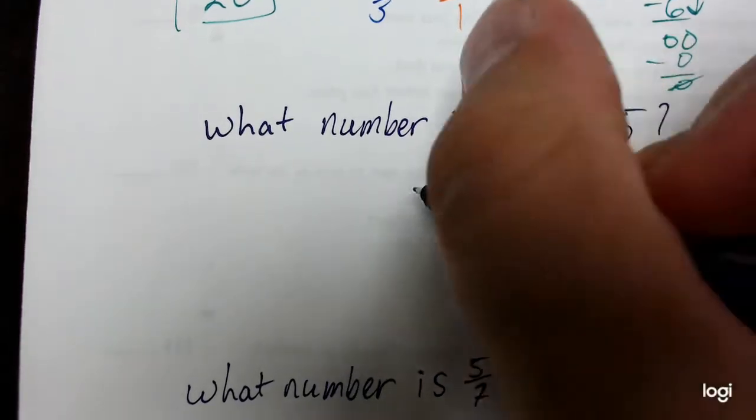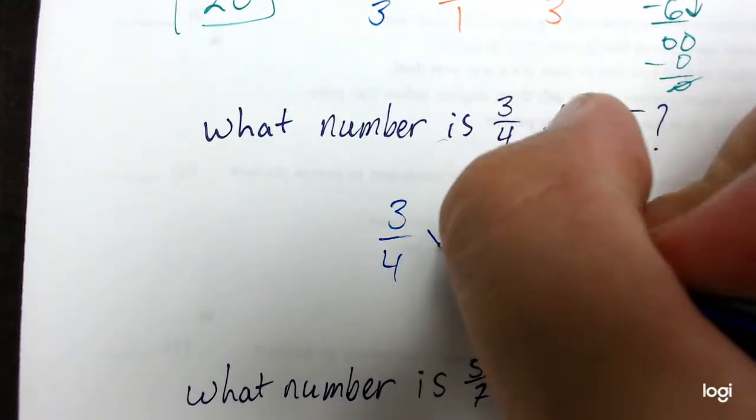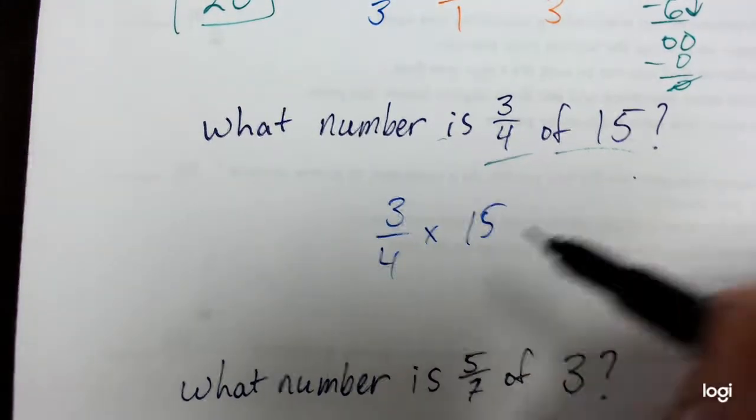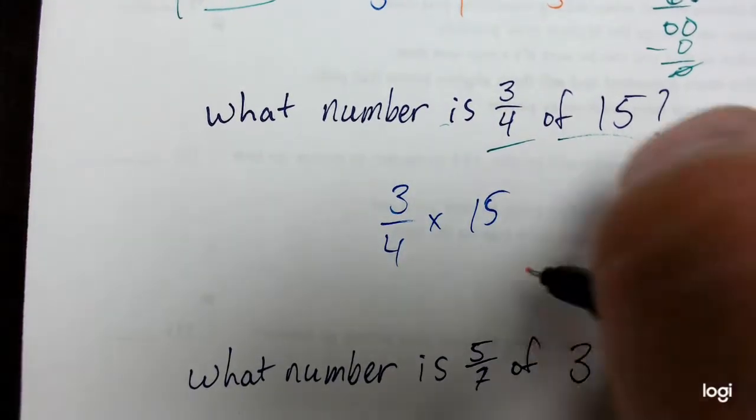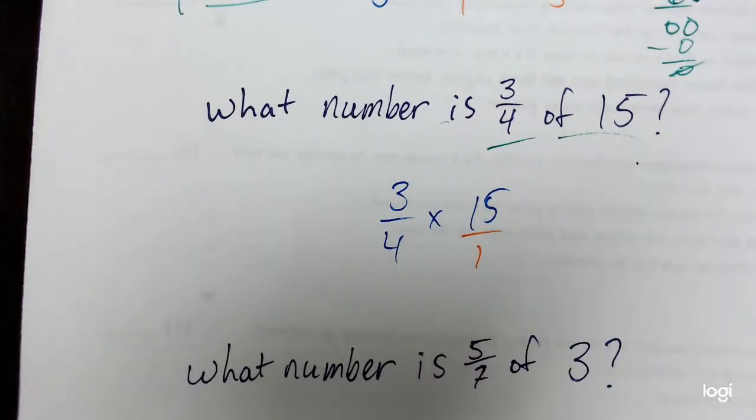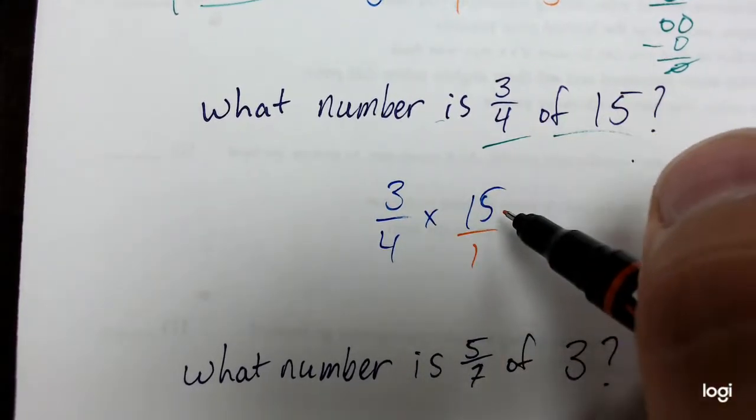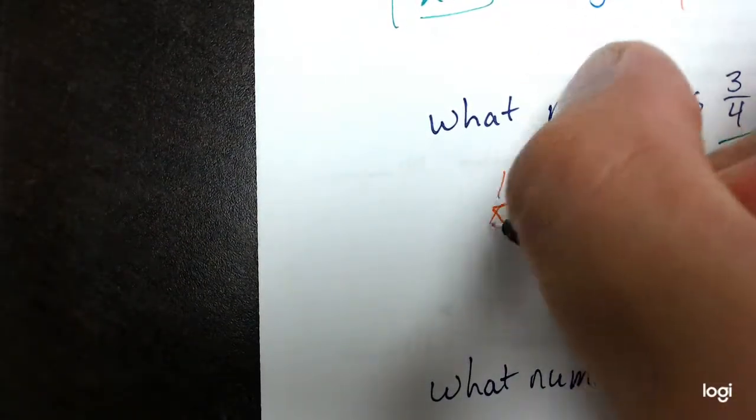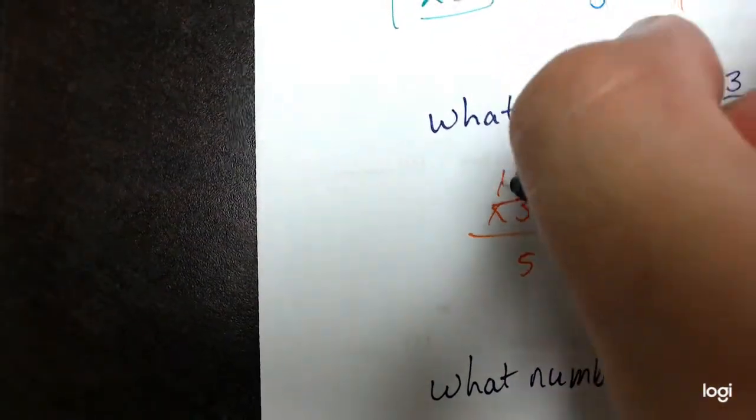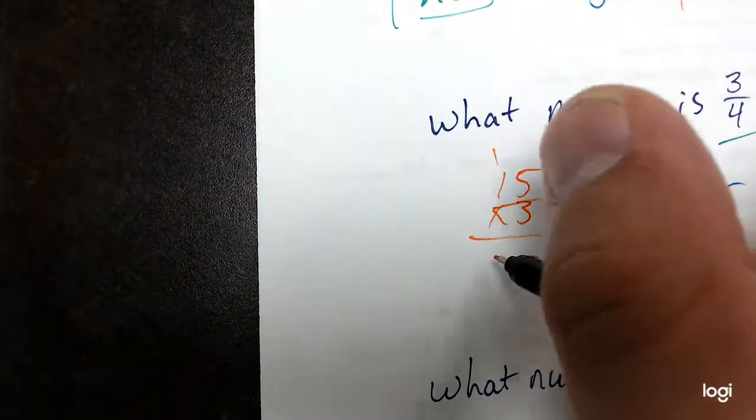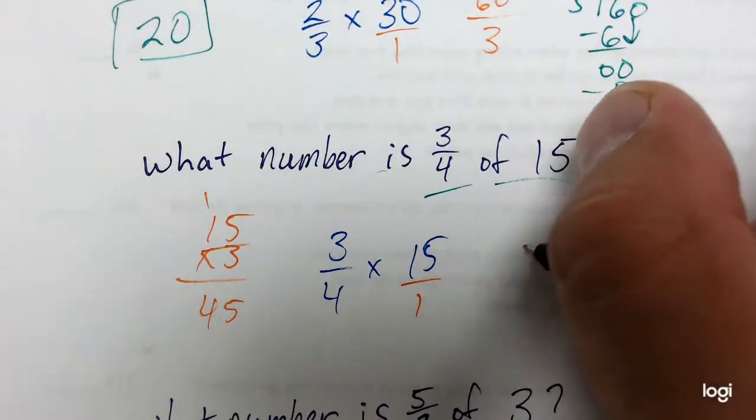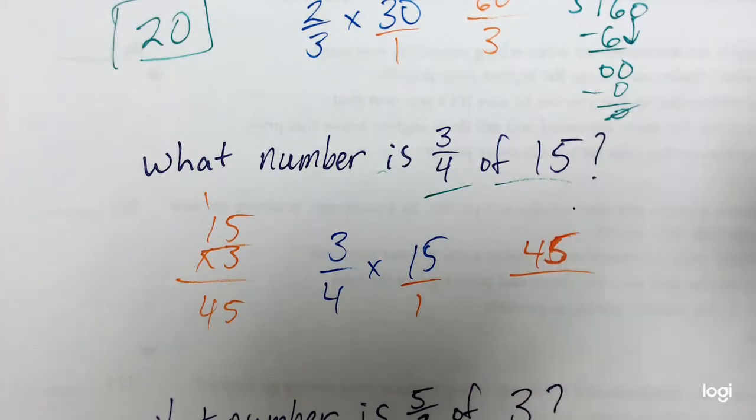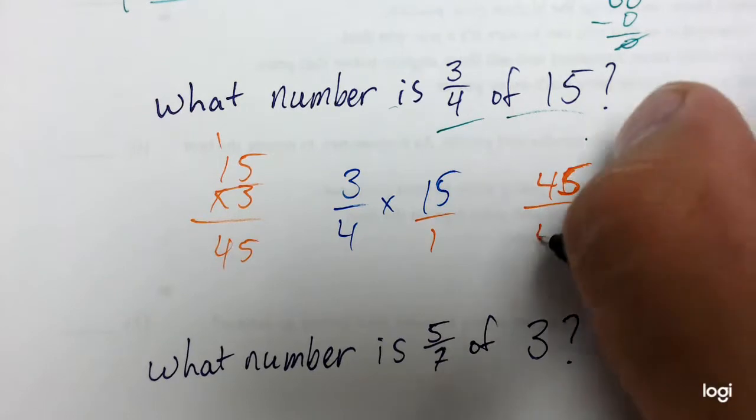So let's go ahead and do it. We'll take 3/4. We'll multiply it by the number 15. But then 15 is a whole number, so I have to write it over 1 to turn it into a fraction. From there, I multiply. 3 times 15. Oh, that's a tough one. Let's do that over here. 15 times 3. 3 times 5 is 15. Carry the 1. 3 times 1 is 3. Plus 1 is 45. So 3 times 15 is 45. I know my 5s look like 6s sometimes. I'm working on it. And then 4 times 1 is 4.